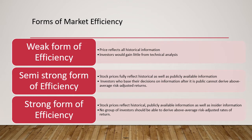The next important form is the semi-strong form of efficiency. It states that stock prices fully reflect both historical and publicly available information — news about the economy, GDP, interest rates, and company actions like mergers. Investors who base their decisions on information after it becomes public cannot derive above-average risk-adjusted returns. As an ordinary investor, there is no way to generate a return higher than the risk-adjusted return.